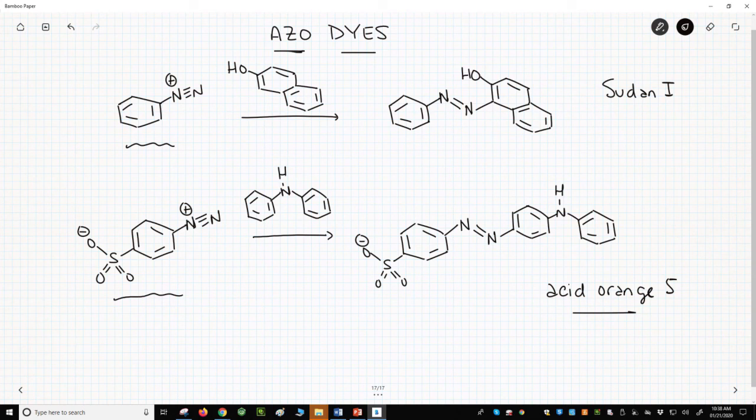The original diazonium ion chemistry, however, revolved around the synthesis of dyes. Beyond textiles, azo dyes also played an important role in biology research and even drug discovery. Azo dyes have their own fascinating chapter in the history of synthetic organic chemistry.